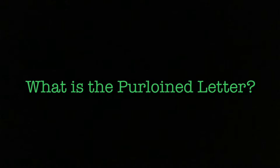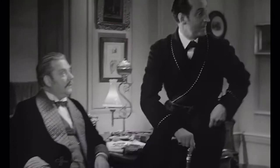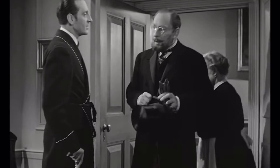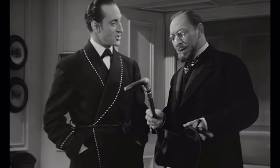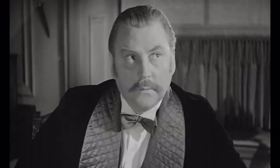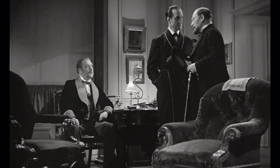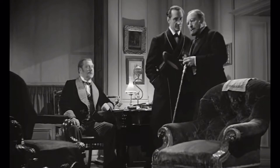One evening, the baffled prefect of the Parisian police visits Dupin to consult with him about a troubling case. If you're familiar with Sherlock Holmes, you would recognize the dynamic played out between the two characters, as the story is generally recognized to have been the inspiration for Conan Doyle's stories. The determined but conventional prefect tells the dispassionate, shrewd Dupin that a letter written by the queen has been stolen by the minister.